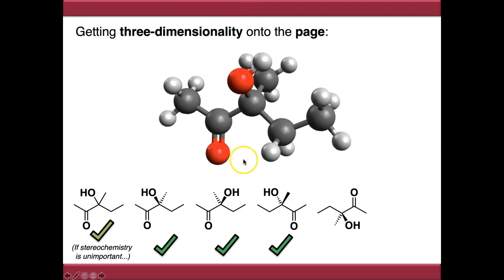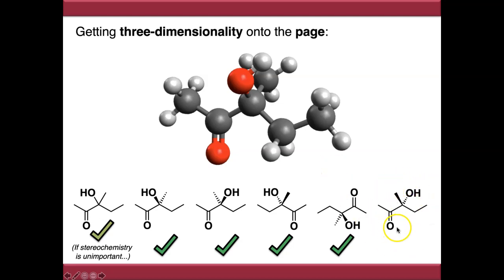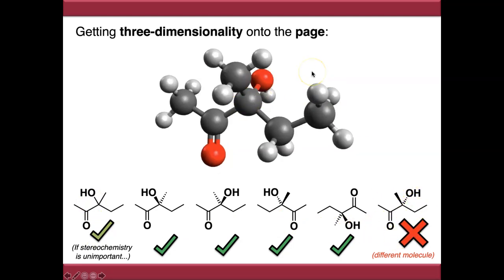What's not okay is flipping the stereocenter — drawing the OH going away and the methyl group coming towards when that's not the case. That's a different compound: the enantiomer. So there are lots of valid artistic interpretations depending on which angle you draw the molecule from, but make sure your stereochemical configuration is accurately portrayed by your skeletal structure.